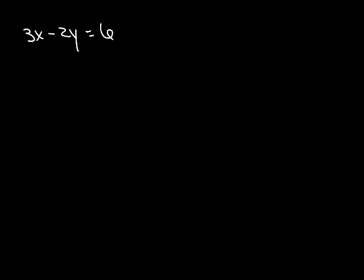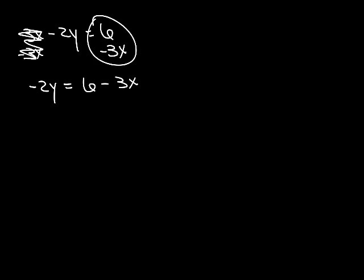So all we have to do is some basic algebra to move things around. We want to get rid of this. In order to get rid of that, notice that it is a positive 3x, so we're going to subtract 3x from both sides, and that makes that go away. We can't combine these, so we're just going to leave it 6 minus 3x. So, now we need to get rid of this negative 2 here. So it's being multiplied by y, so I'm going to divide it. And that goes away. So now I have y equals 6 minus 3x over negative 2.